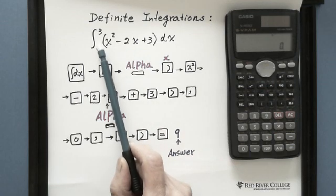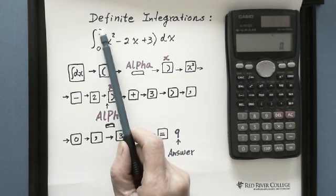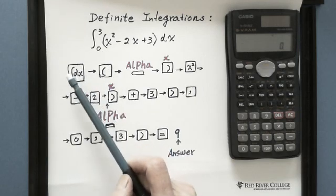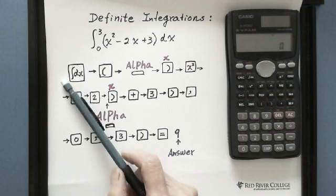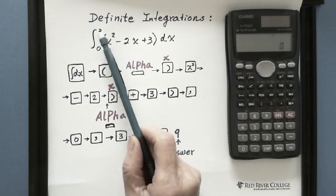The upper limit and bottom limit is 0 to 3. This button, there is no space. Let's enter 0, 3. That's the bottom limit and upper limit.